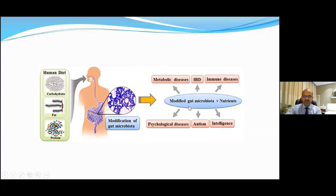The resulting conditions span psychological diseases — autism and impact on intelligence — which are crucial in children. There are also metabolic diseases: obesity, hypertension, diabetes; inflammatory bowel disease; immune diseases; and asthma and allergy.